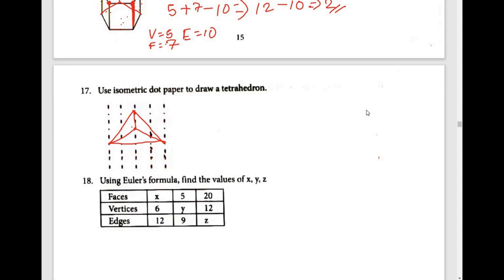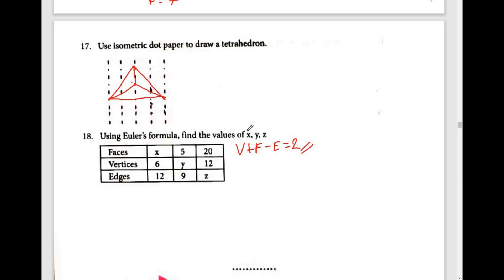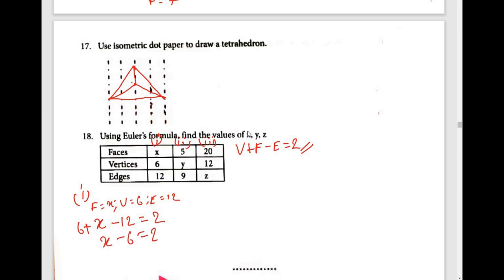Find the values of x, y, z using Euler's formula: Vertex + Face − Edges = 2. First one: faces = x, vertices = 6, edges = 12. So: 6 + x − 12 = 2, which gives x − 6 = 2, so x = 2 + 6 = 8. Therefore x is equal to 8.